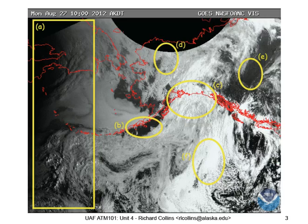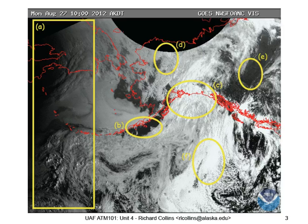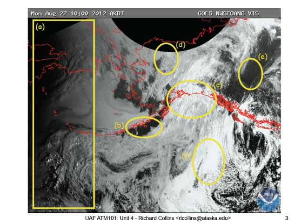We now move to looking at the visible satellite image, corresponding to the same time as the surface map — 10 a.m. Alaska Standard Time on August 27th. This represents the sunlight reflected from the ground and clouds — the view in black and white if we were looking down on the earth from space. In the western Pacific and Siberia, the visible image doesn't tell us much because the sun hasn't risen there yet. This is the great limitation of visible satellite imagery: it only works during the day.